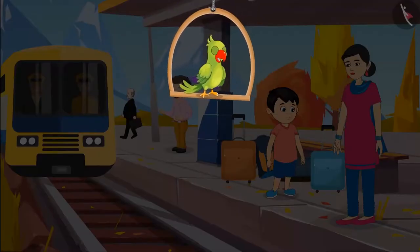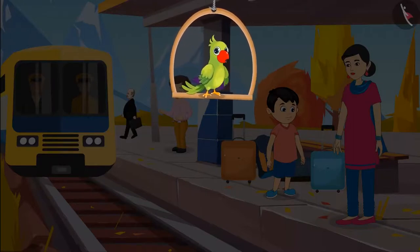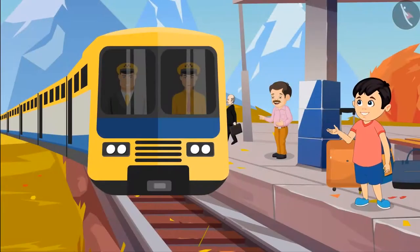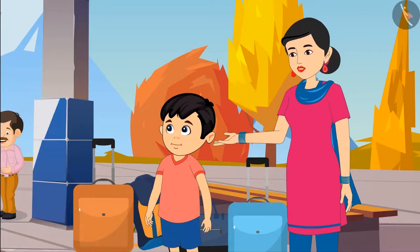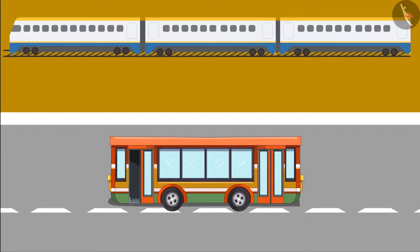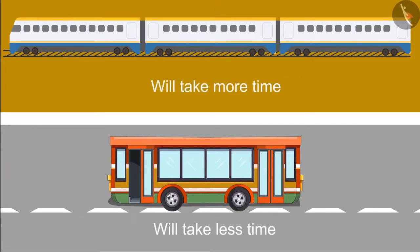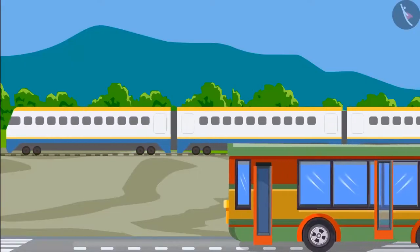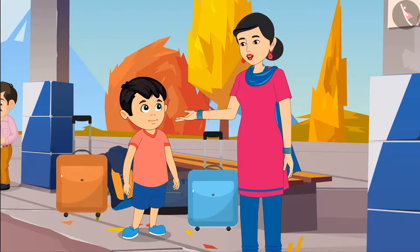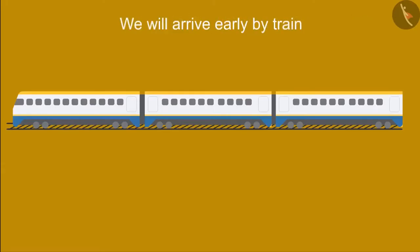Chotu is going with his mother to his grandparents' house by train today. Chotu has come to the railway station for the first time. Mom, this train is so long. Yes, Chotu, there are lots of coaches in the train. Mother, this train is longer than the bus. It means that it will take us longer to reach my grandparents' house. No, Chotu, it's not like that. The train runs faster than the bus. The length of the train is more but it runs faster, so we will reach by train quickly.